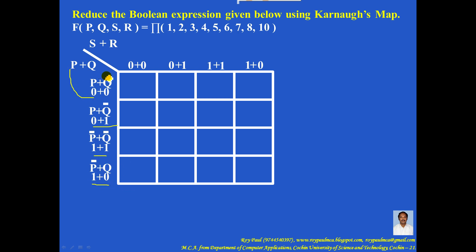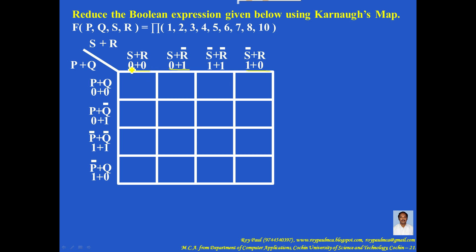The first position is for P and the second position is for Q. 0 should be replaced with a variable and 1 should be replaced with a complement. Similarly, you can write S plus R, S plus R complement, S complement plus R complement, and S complement plus R. Because the first position is for S, second position is for R — 0 replaced with a variable, 1 replaced with a complement.